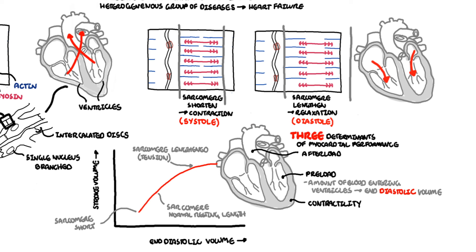Afterload is the other determinant of cardiac muscle function, and this is the force the cardiomyocytes must overcome to pump blood out of our body. Contractility of the heart muscle can be independent of preload — for example, the autonomic nervous system and ions can influence cardiac contractility.